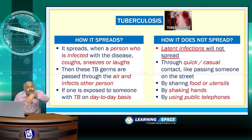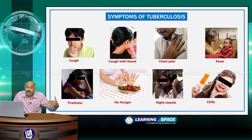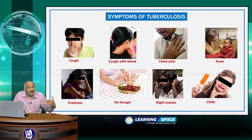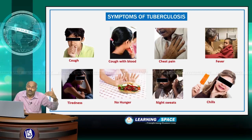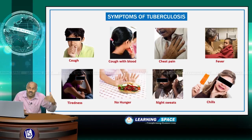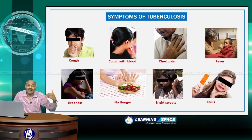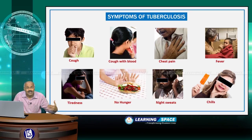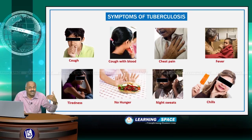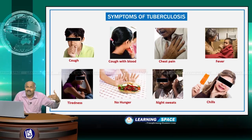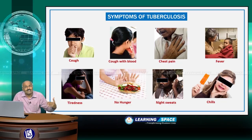The symptoms of tuberculosis include cough as the primary symptom — sometimes cough with blood — then chest pain, fever, tiredness, loss of appetite, night sweats, and chills. These are the main features and symptoms of tuberculosis.